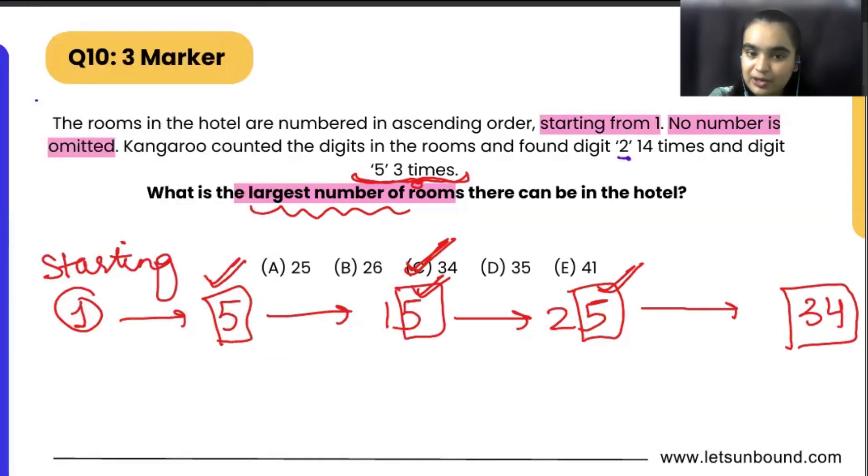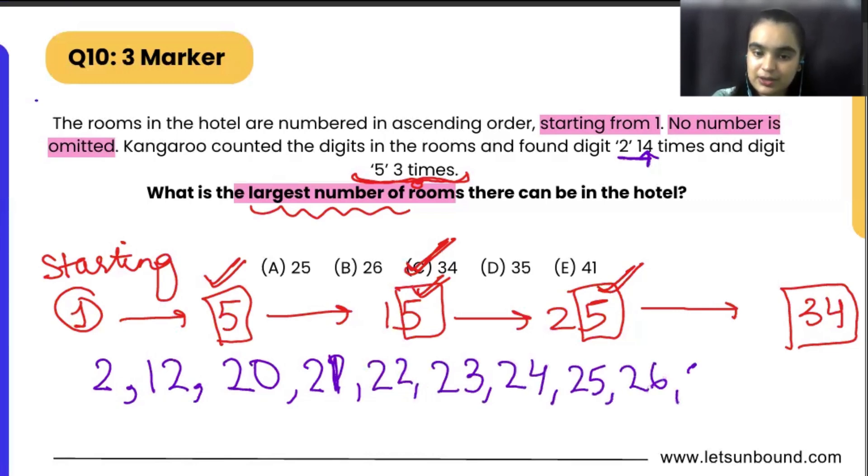How we can check: 2 is basically 14 times. Kangaroo counted the digits in the room and found number 2 fourteen times. So we can see that 2, then we can have 12, then we can have 20, 21, 22, 23, 24, 25, 26, 27, 28, 29.